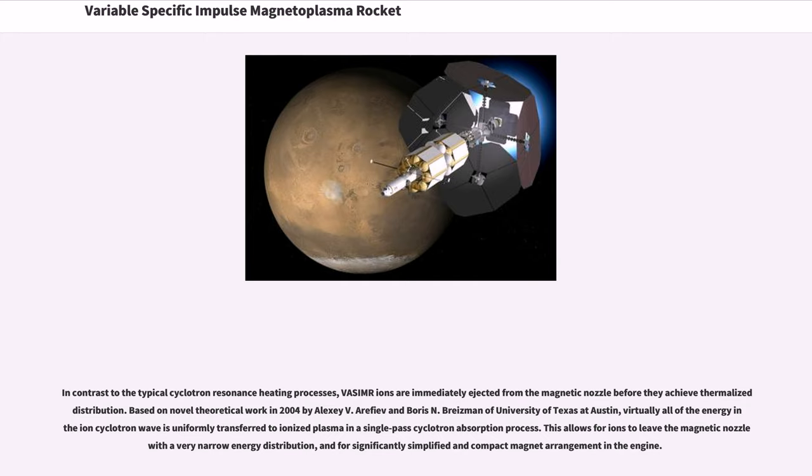In contrast to typical cyclotron resonance heating processes, VASIMR ions are immediately ejected from the magnetic nozzle before they achieve thermalized distribution. Based on novel theoretical work in 2004 by Alexei Vyarifiev and Boris Zembriyasman of University of Texas at Austin, virtually all of the energy in ion cyclotron wave is uniformly transferred to ionized plasma in a single-pass cyclotron absorption process. This allows for ions to leave the magnetic nozzle with a very narrow energy distribution and for significantly simplified and compact magnet arrangement in the engine.